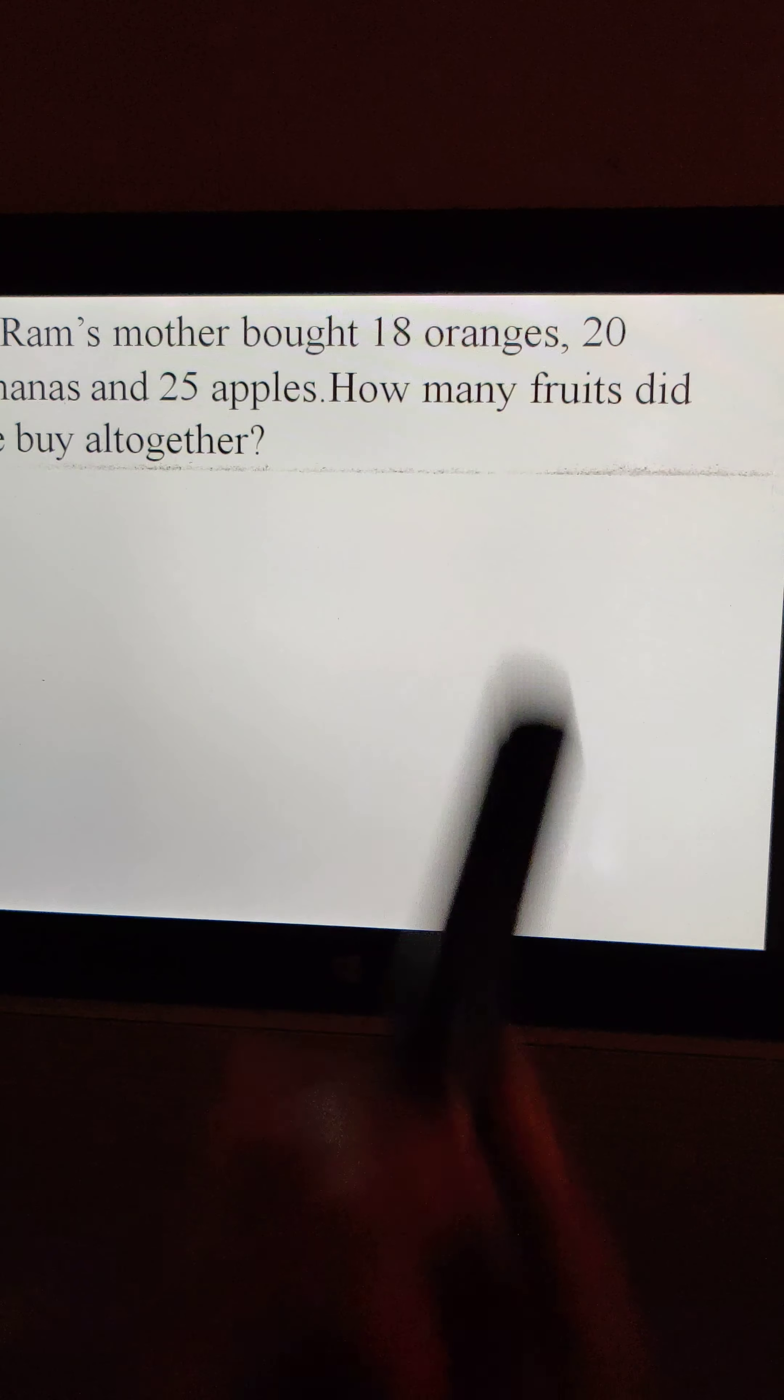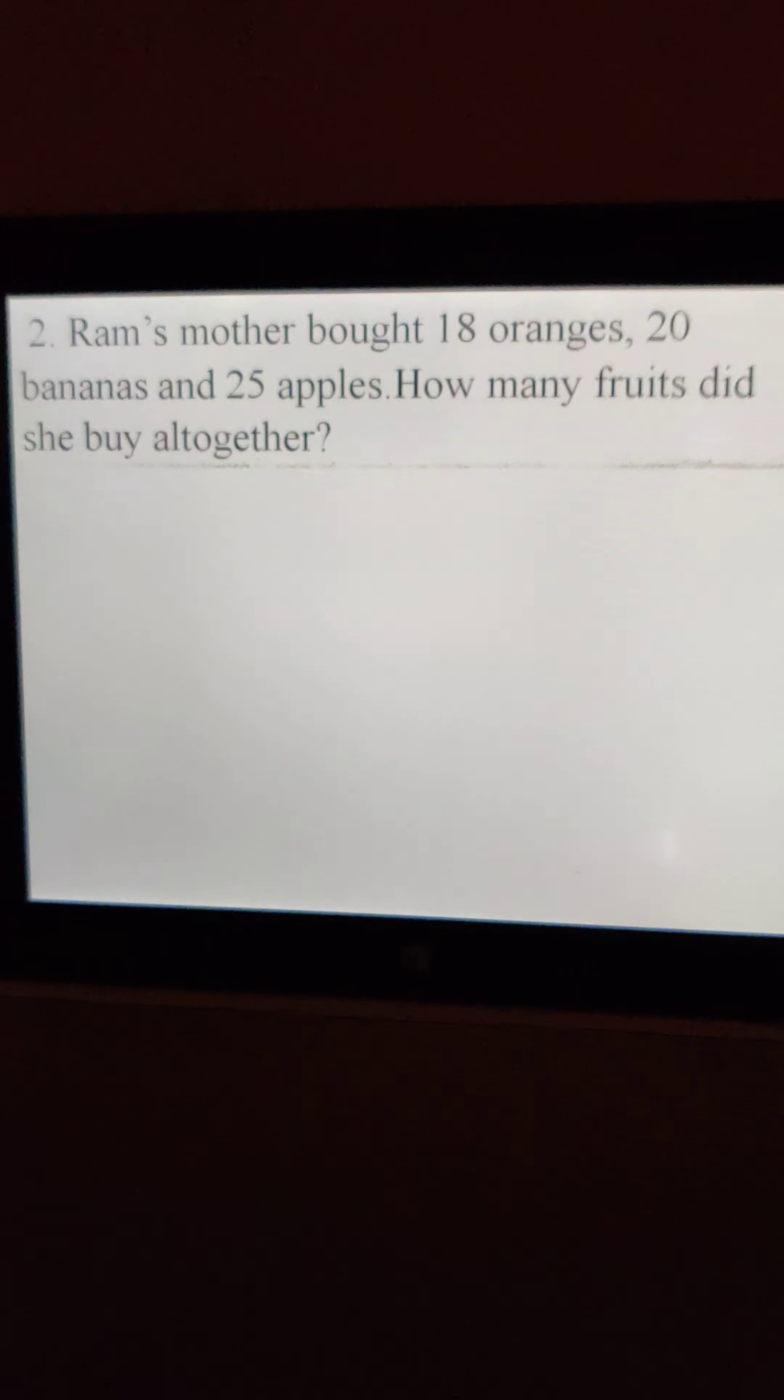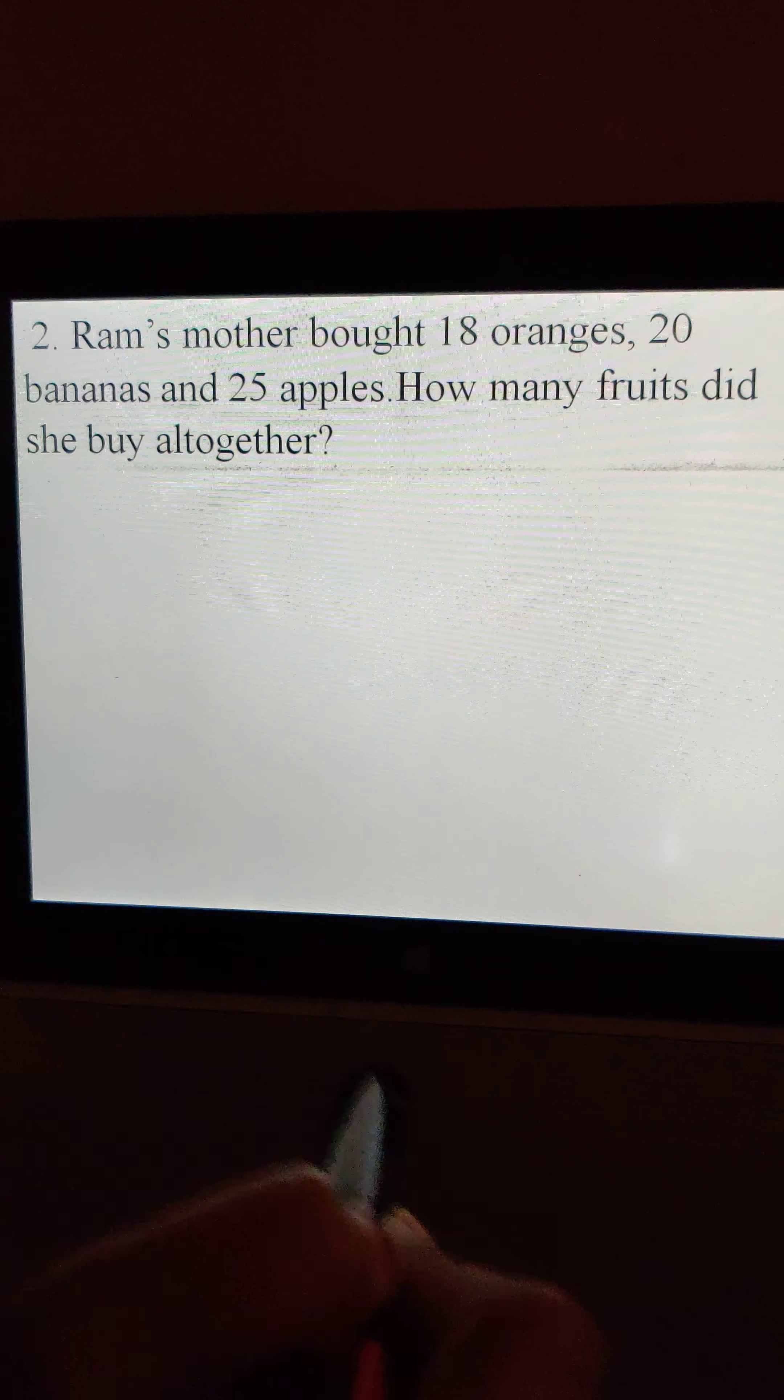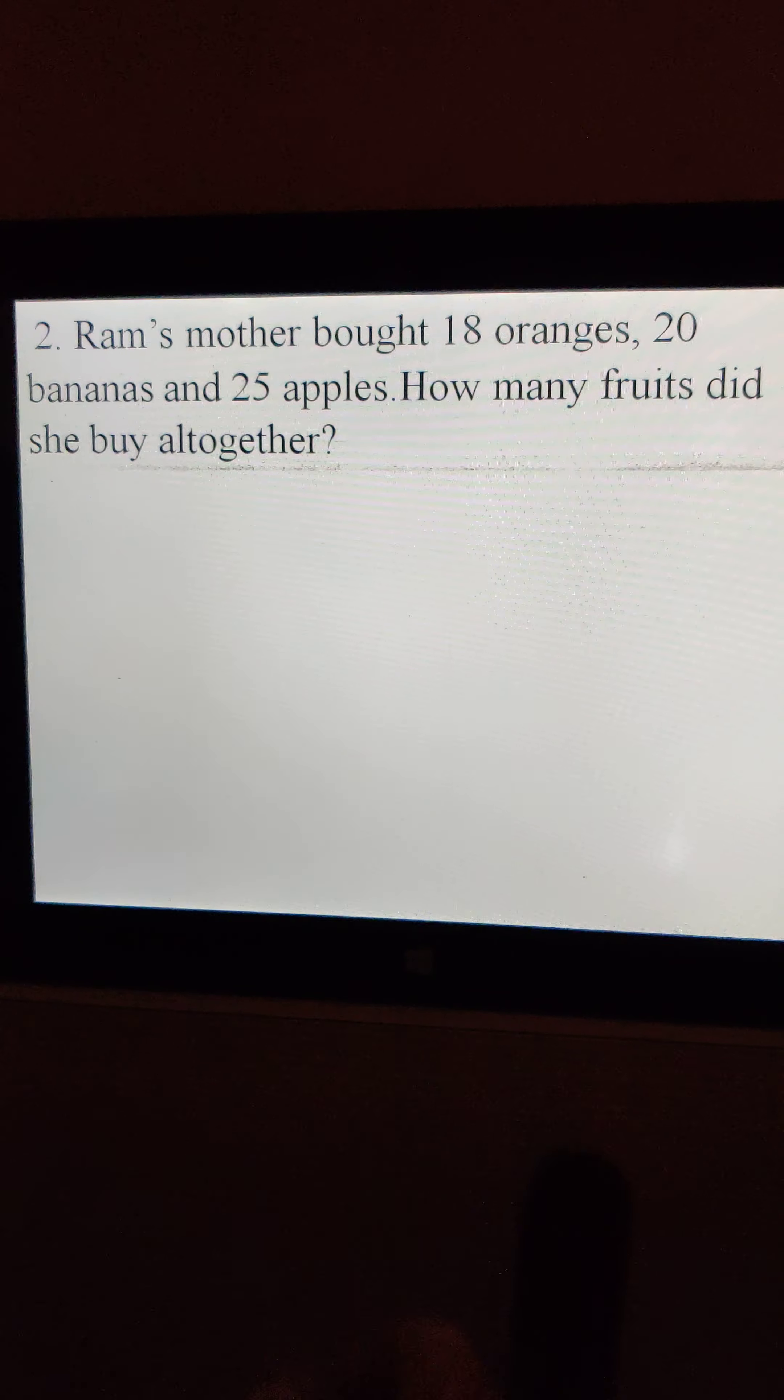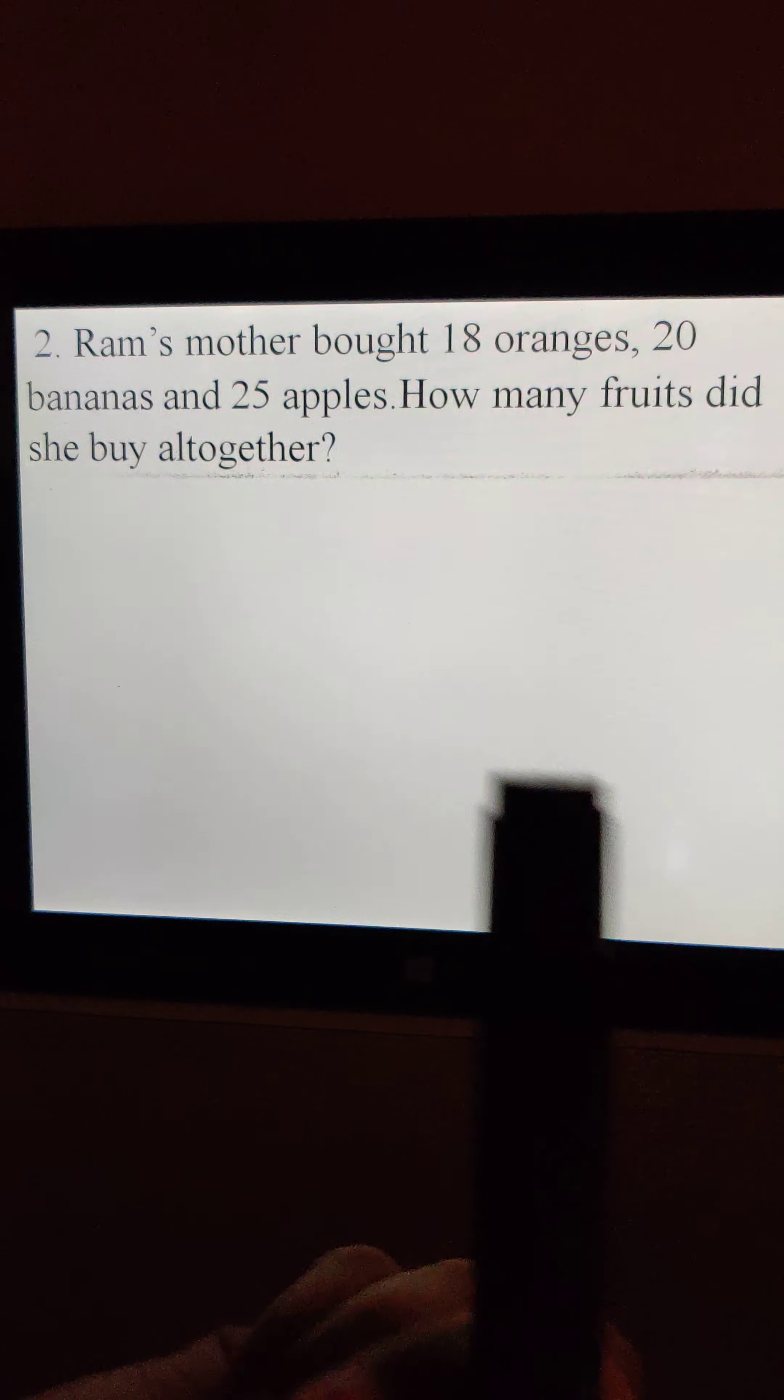Now next. Ram's mother bought 18 oranges. How many oranges? 18, and 20 bananas and 25 apples. How many fruits did she buy altogether? See, this Ram, his mother has bought many fruits. Three fruits basically: oranges, bananas and apples. So we need to find out how many total fruits she had bought.